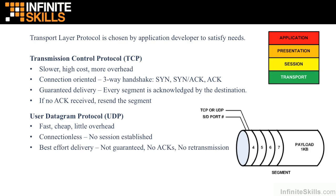Now these two protocols are competing protocols — a segment will only use either TCP or UDP. It really comes down to how certain we need to be that we get this information to the destination. If it's really important, you'll pay a higher price and use a more certain delivery mechanism: TCP. If it doesn't hurt us much if the recipient doesn't get this information, we might use a cheaper and faster protocol called UDP, because it is fast and cheap and has very little overhead.